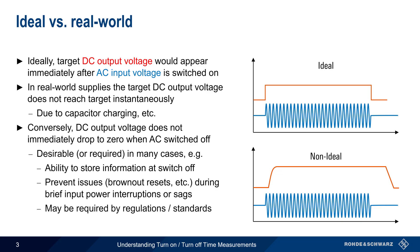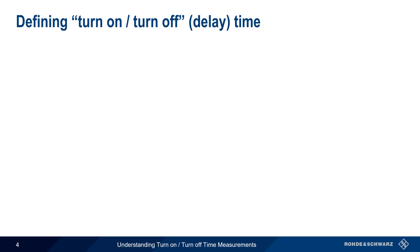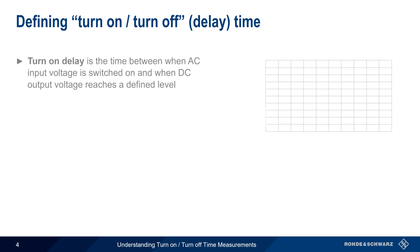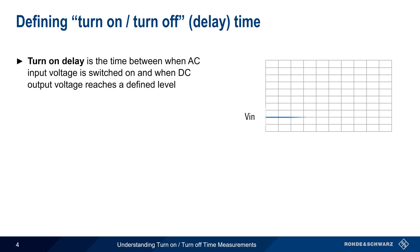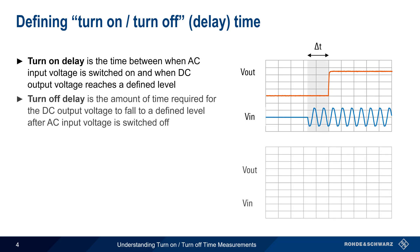In fact, some regulations for medical and aviation devices specify a minimum time that output power must be provided after the supply is turned off. We can therefore define two delay times. The turn-on delay is the time between when the AC input voltage is switched on and when the DC output voltage reaches some defined level. Turn-off delay is the time between when the AC input voltage is turned off and when the output DC voltage falls to a defined level.